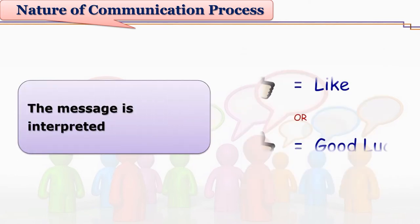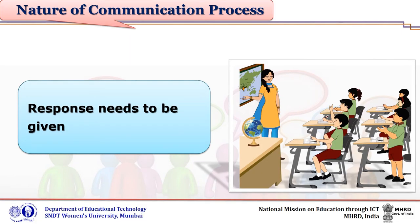Once the receiver perceives the message, the message is interpreted. Whatever effective manner the sender uses, it is up to the receiver what interpretation of the message is done at the receiver's end. Remember, the message is not the one which is sent by the sender, but the message is the one which is perceived and interpreted by the receiver. So many times, the message sent by the sender and the message interpreted by the receiver may differ, and the communication process fails there. It is very important that the message is interpreted by the receiver in the same manner which is intended by the sender.